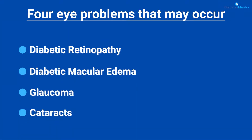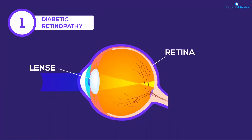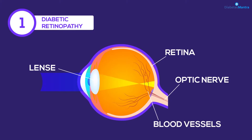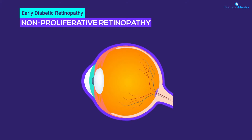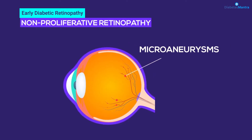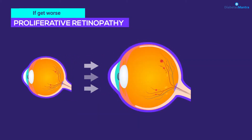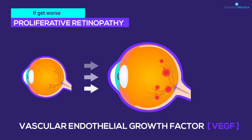Let us see all four eye problems in detail. First, diabetic retinopathy. The retina is the inner lining at the back of each eye. It senses light and turns it into signals that your brain decodes, so you can see the world around you. Damaged blood vessels can harm the retina causing diabetic retinopathy. In early diabetic retinopathy, blood vessels can weaken, bulge or leak into the retina — this is called non-proliferative diabetic retinopathy. If the disease gets worse, some blood vessels close off, causing new blood vessels to grow on the surface of the retina, called proliferative diabetic retinopathy. These abnormal new blood vessels can lead to serious vision problems.